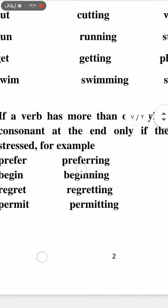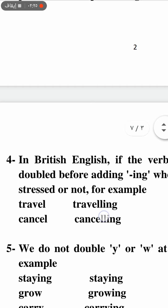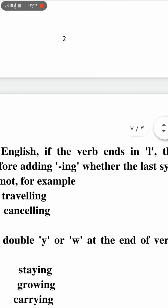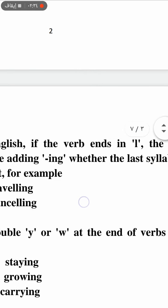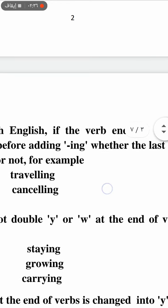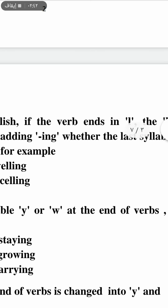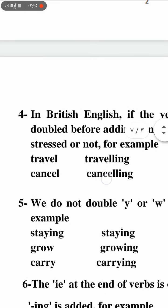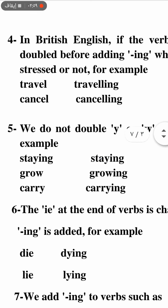In this case, we double the last syllable's consonant before adding -ing. Also, if the verb ends in L — such as cancel — whether the last syllable is stressed or not, we double the L.